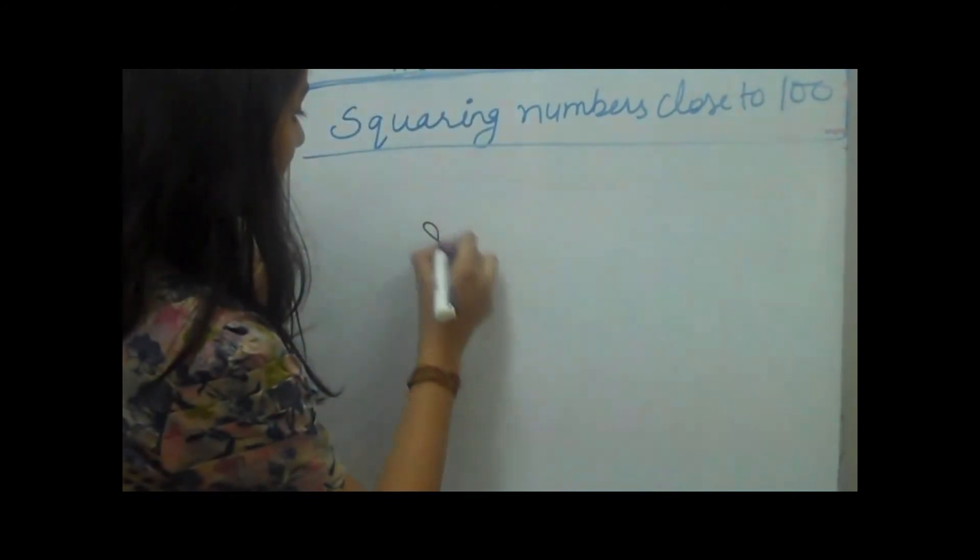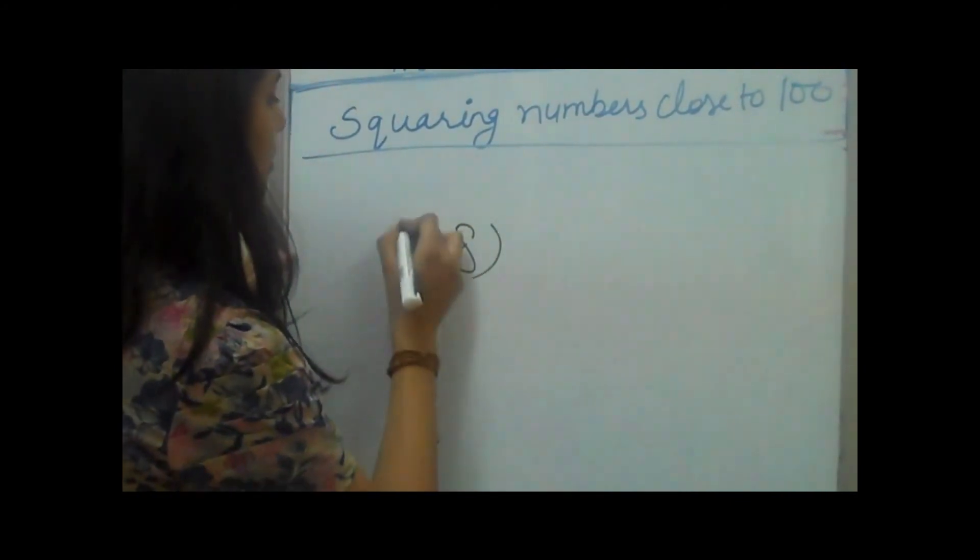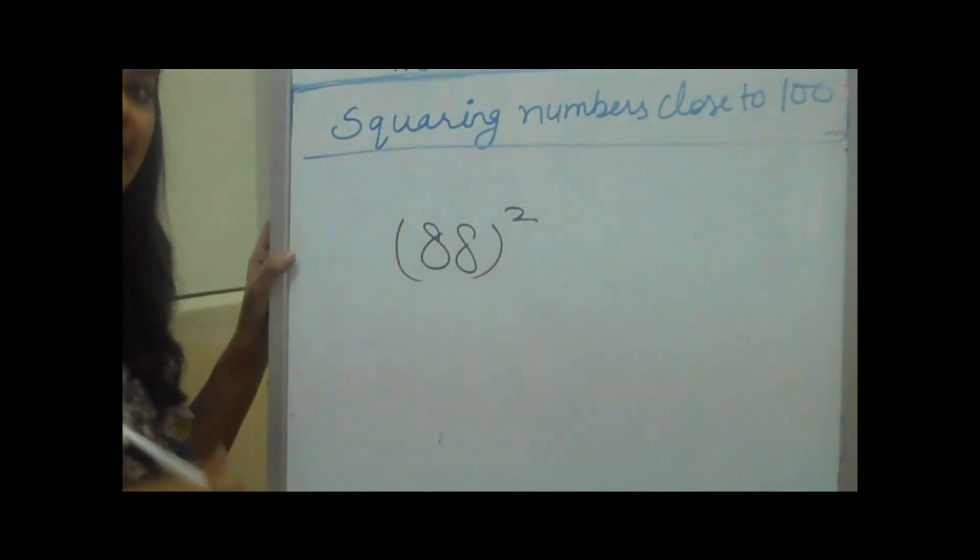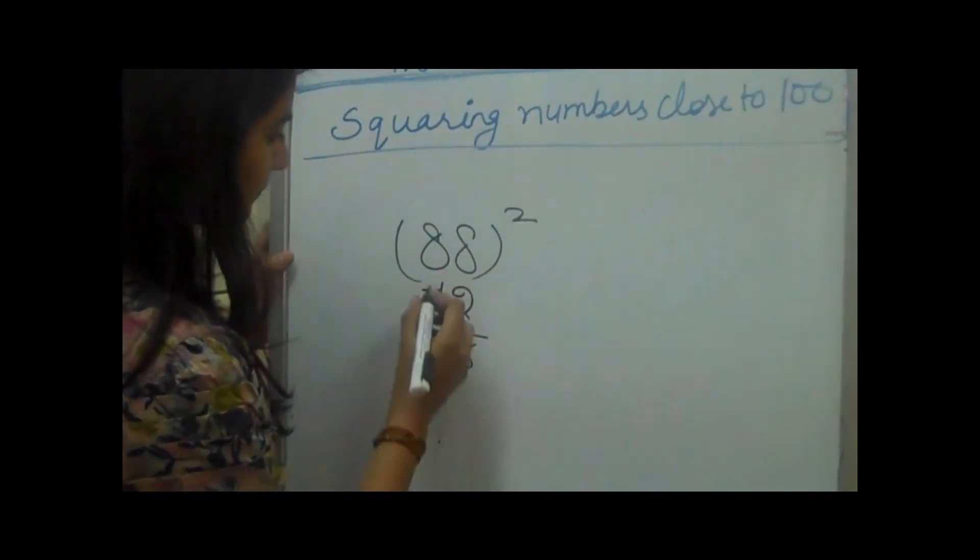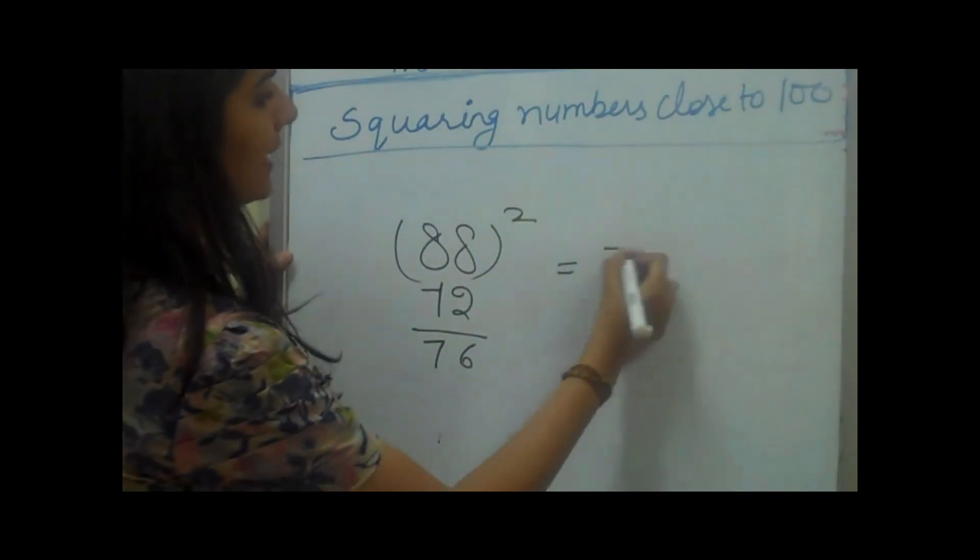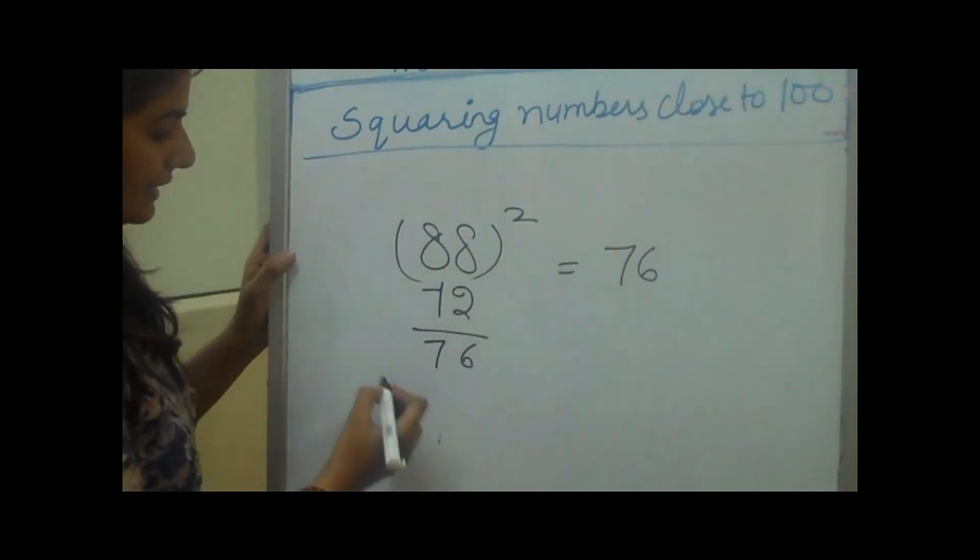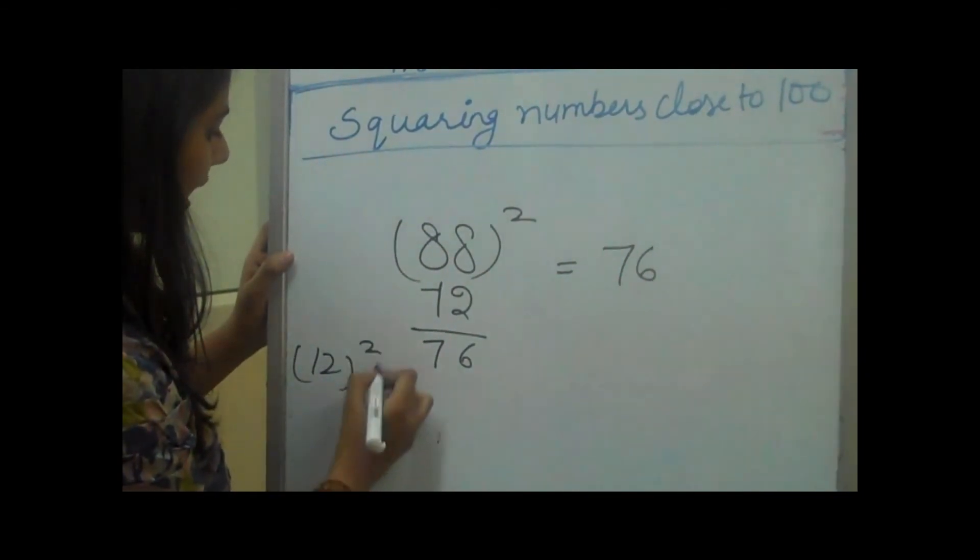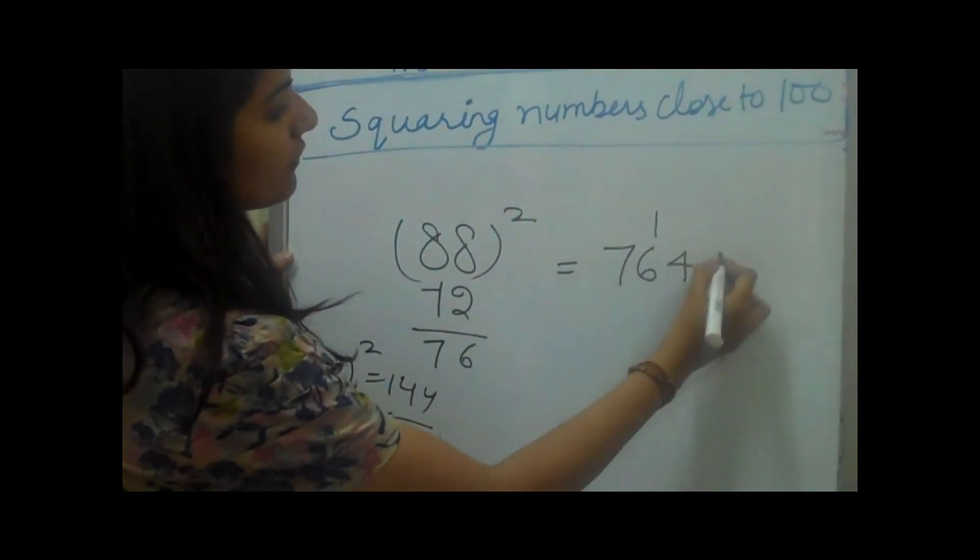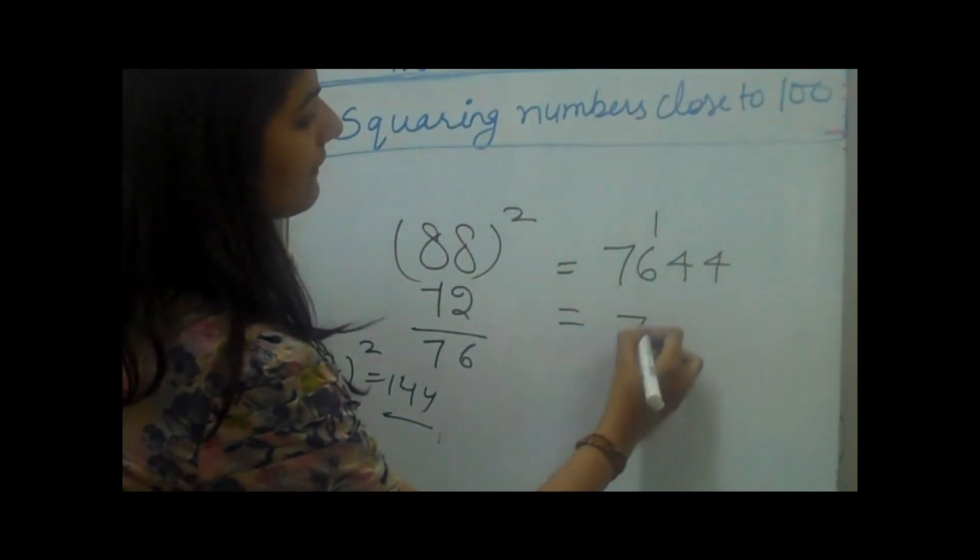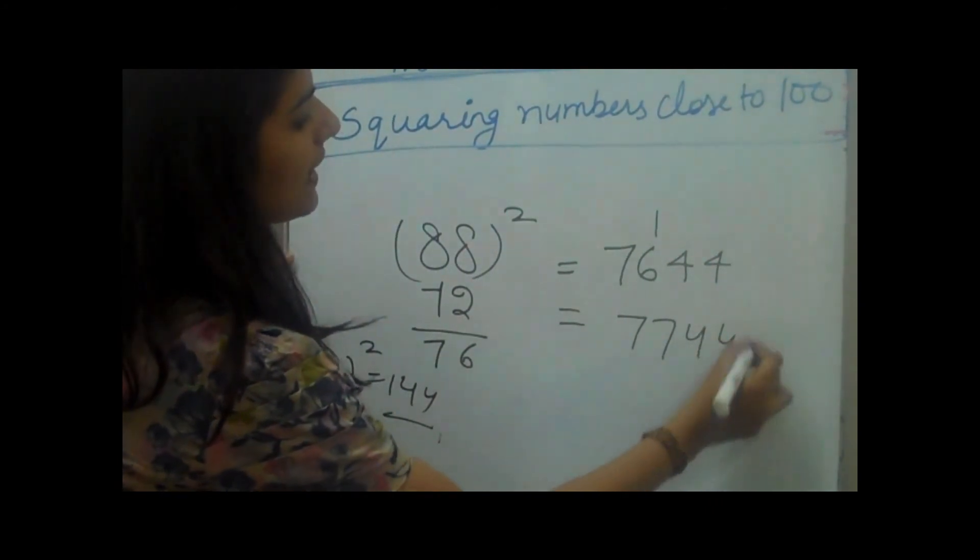If we have a number 88, which is 12 less than 100, we will subtract 12 from here. We will write 76 here. And then 12 square is again 144, which gives 1 as carry over, 44 here. And it gives 7744 as the answer.